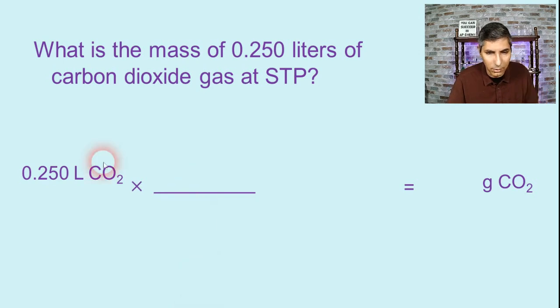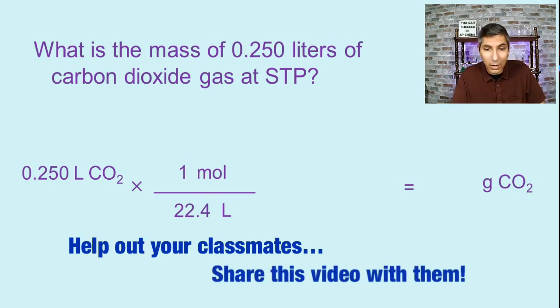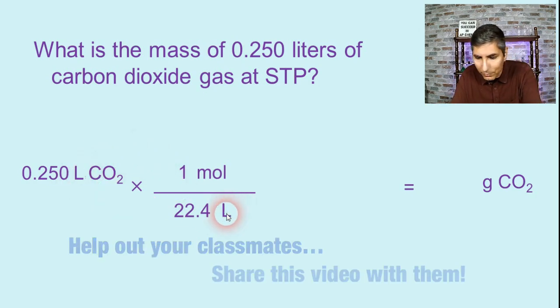So in my first conversion factor, I'm going to put liters on the bottom and moles on the top. Now, what numbers go into this conversion factor? Well, one mole is equal to 22.4 liters. Now, if you forgot that, or if you aren't sure which number to put in which position, then look at the roadmap. Because next to mole, the number one is there. And next to liters, we see the number 22.4. So we can use the roadmap to help us know which numbers to put in which positions in these conversion factors. Now, we can cancel liters top and bottom just like that.